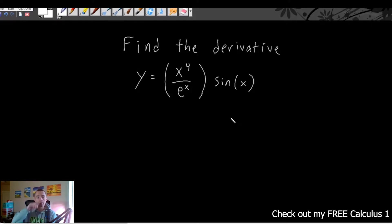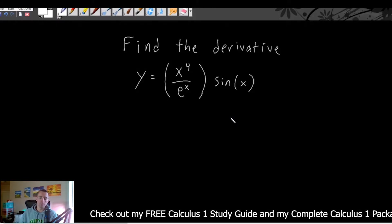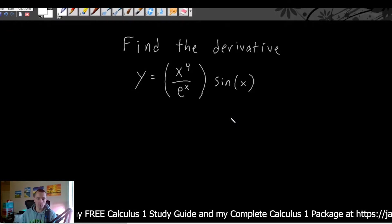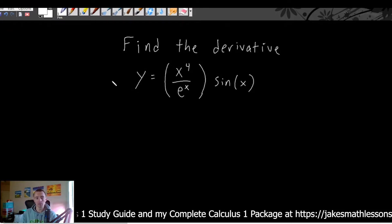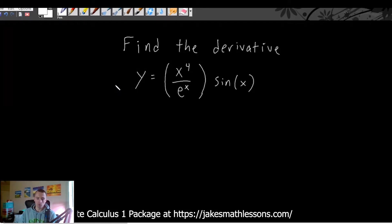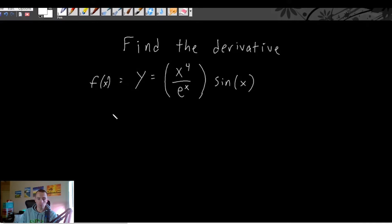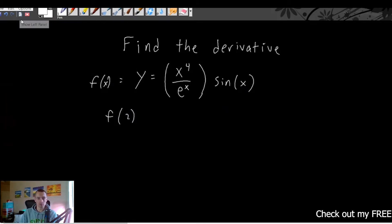It's going to be a similar method that you want to think about as you're setting this up — similar to the live stream I did last week where I talked about product rule and chain rule in one problem. And that is: you want to think about if you were to actually plug in some x value. So let's say this is some function f of x and we want to find f of two, for example. Think about the order of operations that we would have to go through to do that.